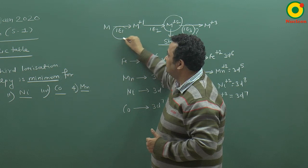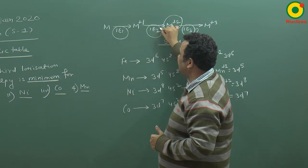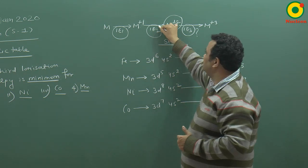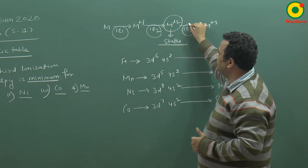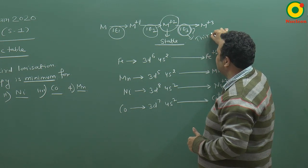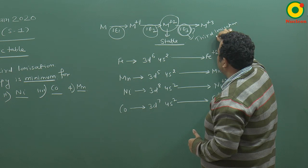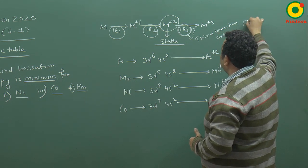that energy is called as I1. If we remove the second electron, it is called second ionization enthalpy, and then third ionization enthalpy. So he is asking about third ionization enthalpy, which should be minimum?